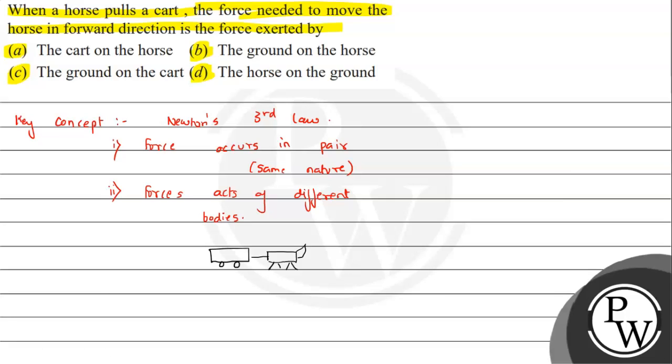Here we are asked how the horse is going to move forward. As we discussed in Newton's Third Law, to every action there is an equal and opposite reaction. The horse's legs will be pushing the ground in the backward direction. This is the force on ground due to horse.